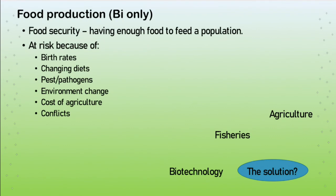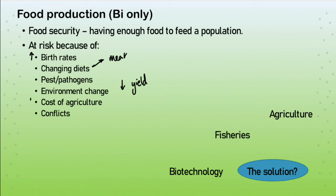Food security — making sure the whole global population has enough food — is biology only. It's at risk because of increasing birth rates, changing diets moving towards more meat, pests and pathogens infecting crops, environmental change decreasing crop yield, increased cost of agriculture, and conflicts. All of these put food security at risk.